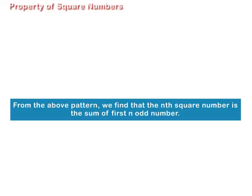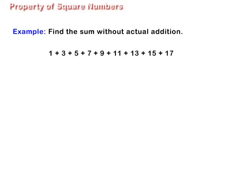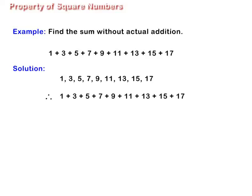Let us take an example and find the sum without actual addition: 1 plus 3 plus 5 plus 7 plus 9 plus 11 plus 13 plus 15 plus 17. The numbers 1, 3, 5, 7, 9, 11, 13, 15, and 17 are the first 9 odd numbers.